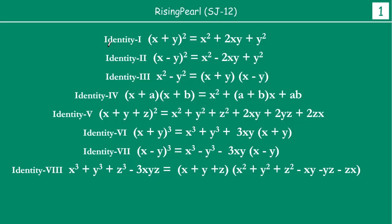Now, let us go through this. The second identity is (x − y)² = x² − 2xy + y². The third one says x² − y² = (x + y)(x − y). The fourth one is (x + a)(x + b), which when expanded gives x² + (a + b)x + ab. Now we will talk about our fifth identity: (x + y + z)² = x² + y² + z² + 2xy + 2yz + 2zx.